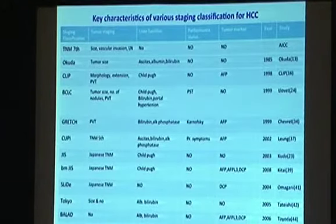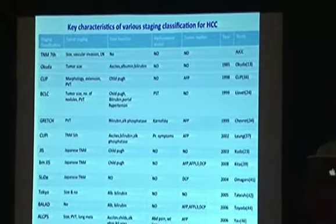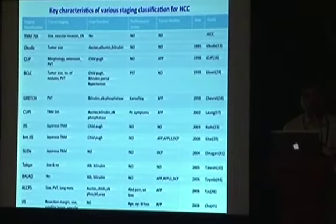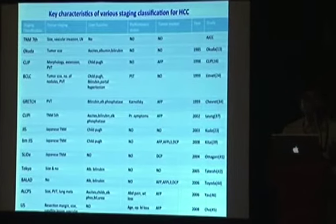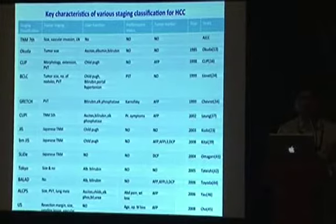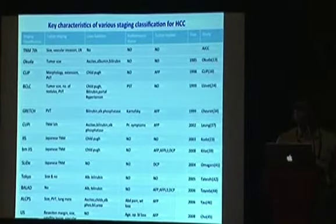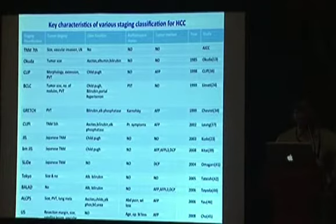This slide displays the key characteristics of various staging systems. The earliest to be used was TNM staging — we are using the 7th edition now. It mainly relies on tumor characteristics but does not include liver function or performance status, making it a handicapped staging system. The Okuda staging was one of the earliest to use liver function criteria, but its tumor characteristics are very gross — essentially 50% liver involvement or more — and it has lost relevance in the present age when tumors are detected very early.